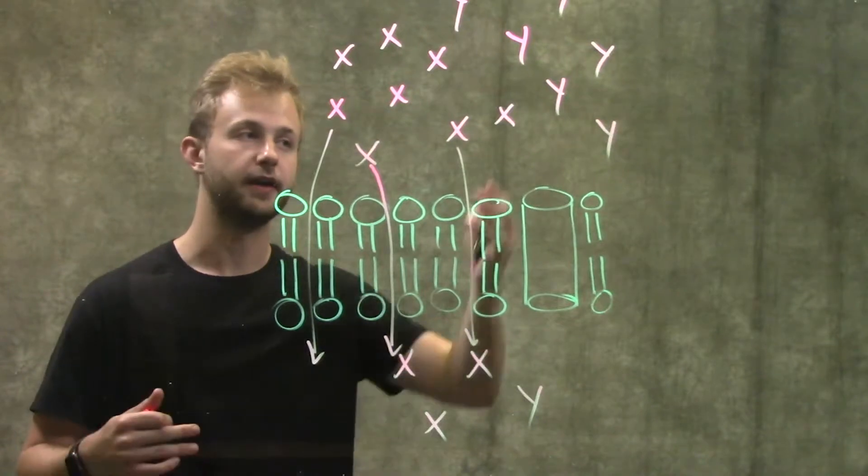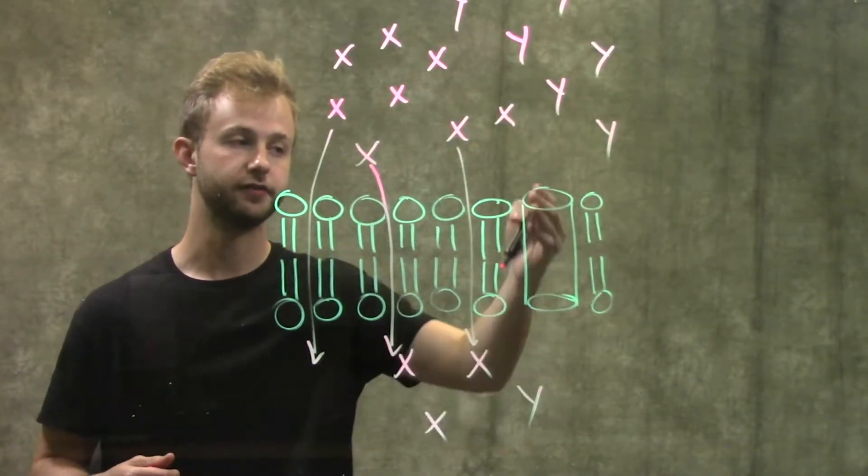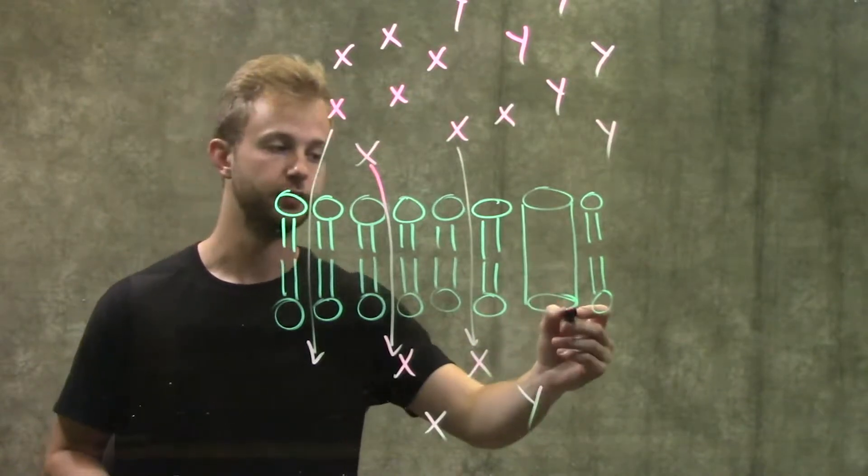But it still can go down its concentration gradient through the help of something called a transport protein, which we have right here.